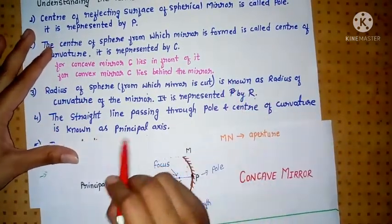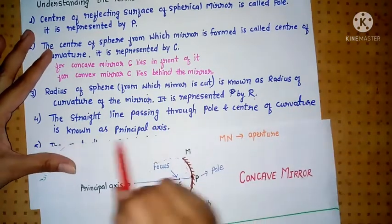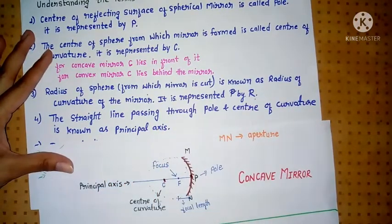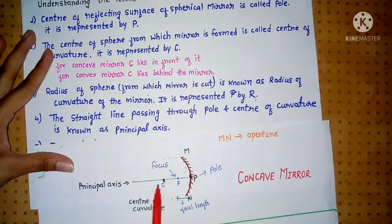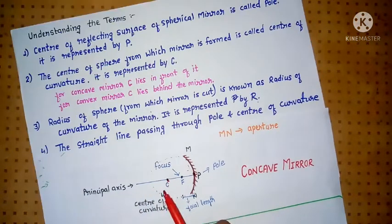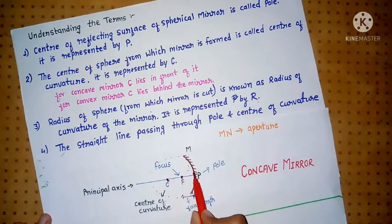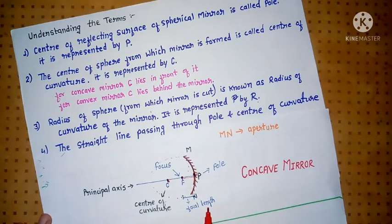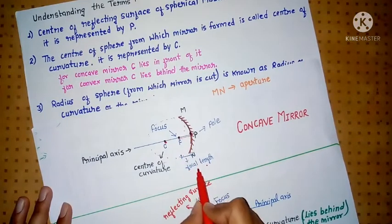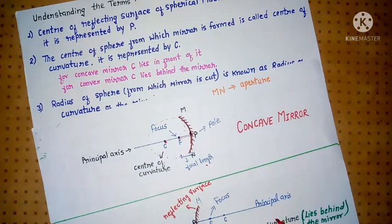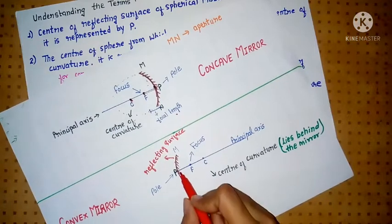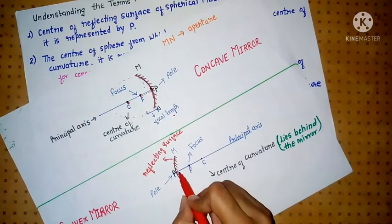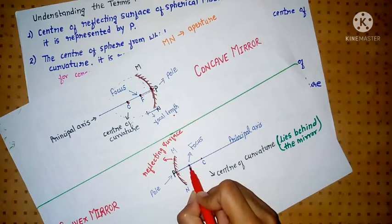The straight line passing through the pole and the center of curvature is known as the Principal Axis. The point known as Focus — the distance from this point to the pole is known as Focal Length. Similarly, in a convex mirror also, the distance from pole to focus is known as focal length.